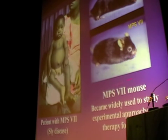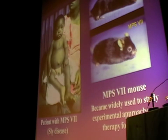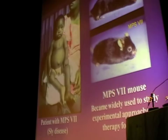The MPS7 mouse, because it was available so early, became widely used to study experimental approaches to therapy for LSDs, such as enzyme replacement therapy, gene therapy, and bone marrow transplantation.